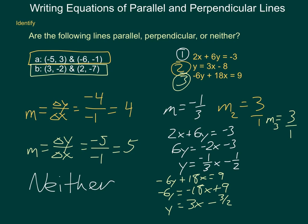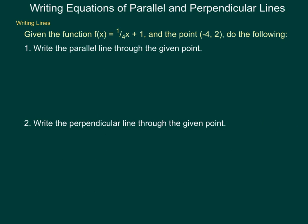Simply following through our process and isolating the slope of each equation tells us whether lines are parallel or perpendicular. But from the information we have and our ability to write equations, we can also write parallel or perpendicular lines. So given the base function, f(x) equals 1/4 x plus 1, and the point negative 4, 2, we're going to do the following. First, we're going to write the parallel line through that point.